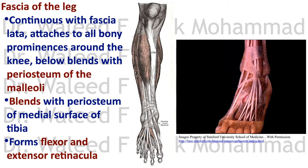The fascia of the leg: the superficial fascia is thin over the tibia and has an adipose layer over the rest of the leg, continuous with that of the thigh. The deep fascia encircles the leg and blends with the periosteum of the medial and lateral malleoli lower down. It also blends with the periosteum of the medial subcutaneous surface of the tibia, and forms the flexor and extensor retinacula.